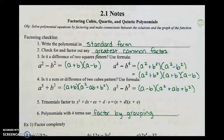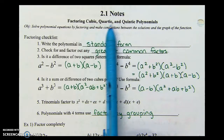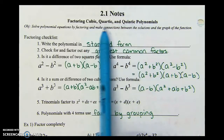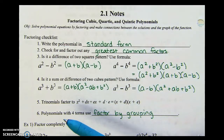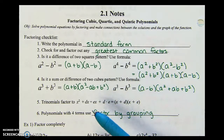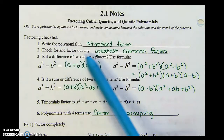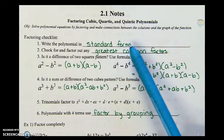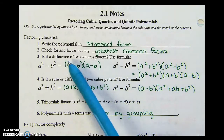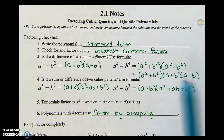Welcome to Math 3 Honors. We're going to learn some advanced factoring — this is 2.1 notes on factoring cubic, quartic, and quintic polynomials. Factoring is always a checklist you have to go in order. Always start with writing your polynomial in standard form, where you start with the highest power and go down. Always check for a greatest common factor.